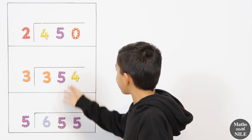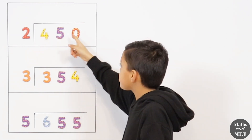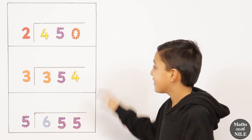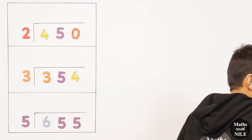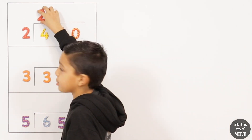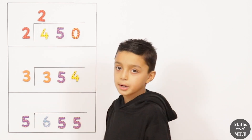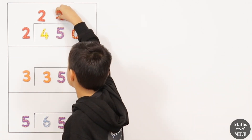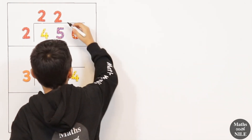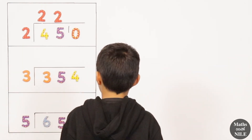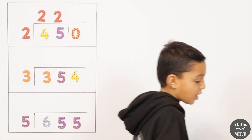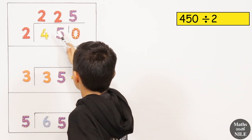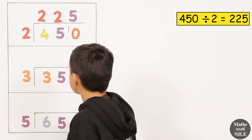We have three more questions. The first is 450 divided by 2. We do 4 divided by 2, which equals 2. Then 5 divided by 2, which equals 2 remainder 1. So we put our 1 here, which means it's now 10 divided by 2, which is 5. So 450 divided by 2 equals 225.